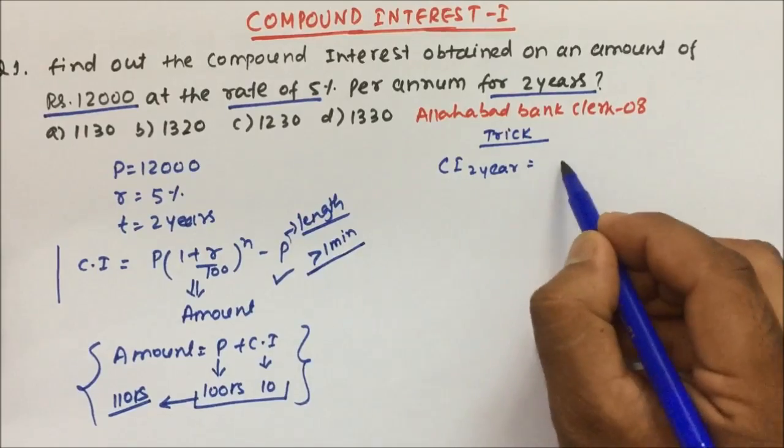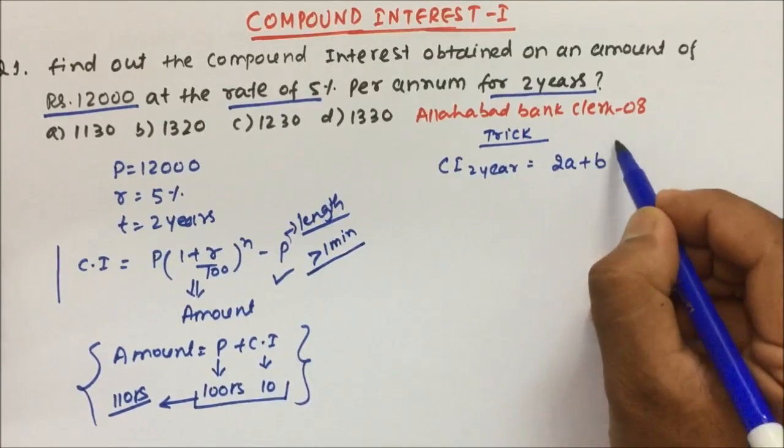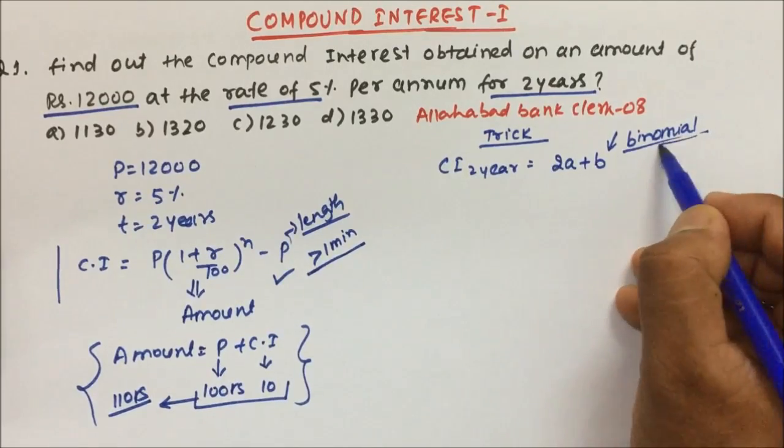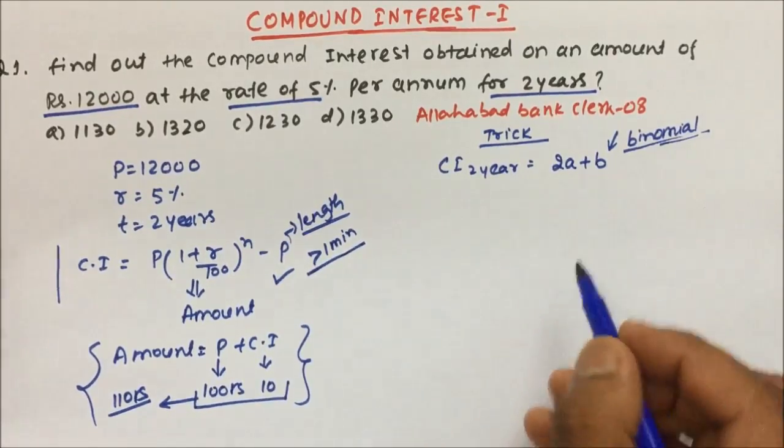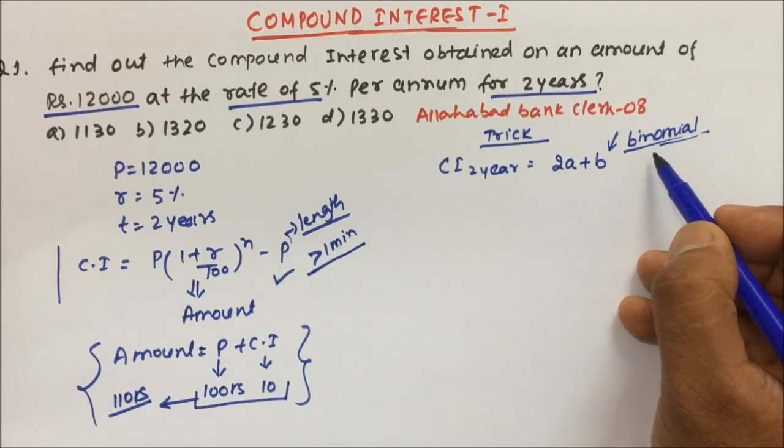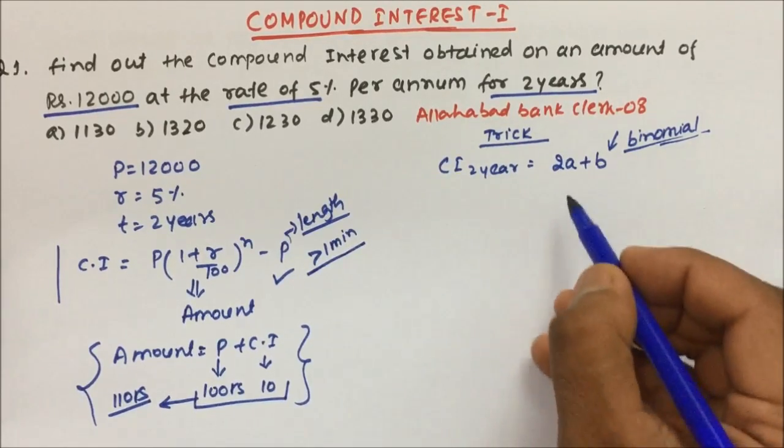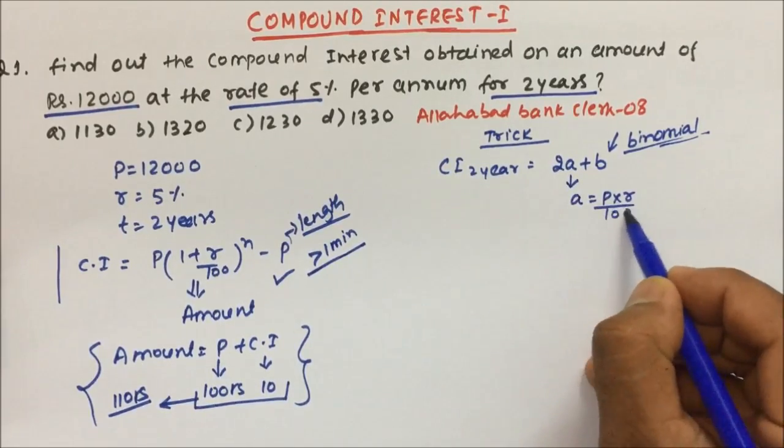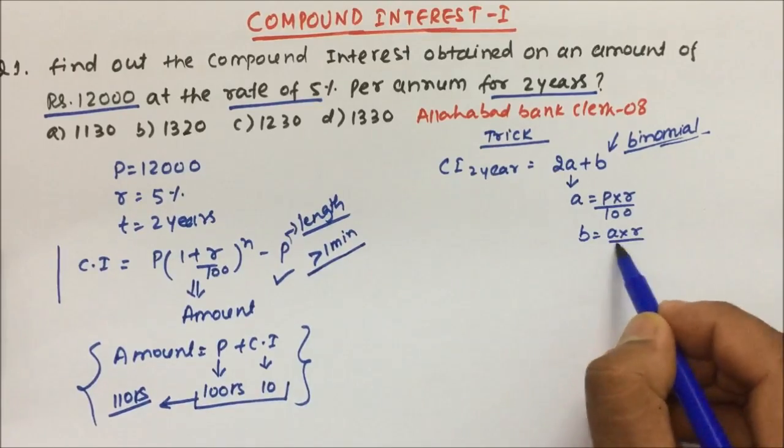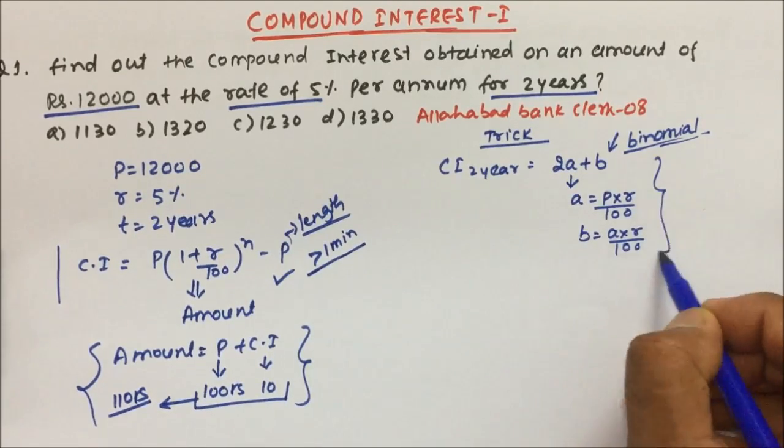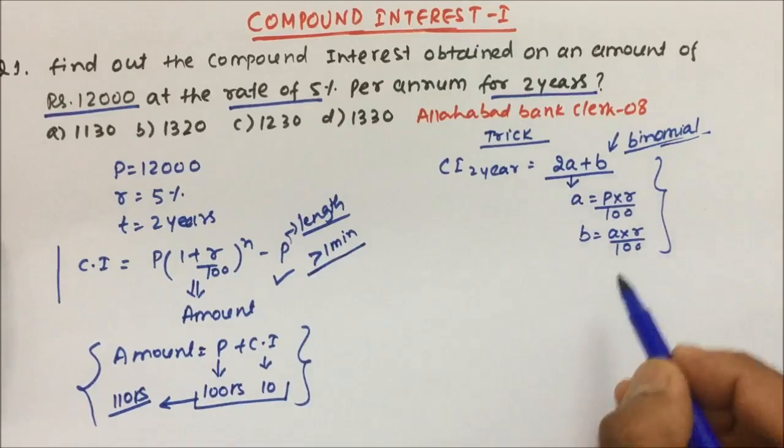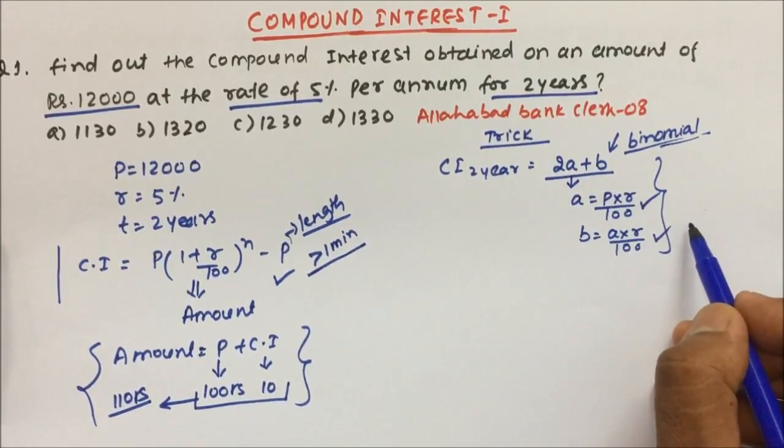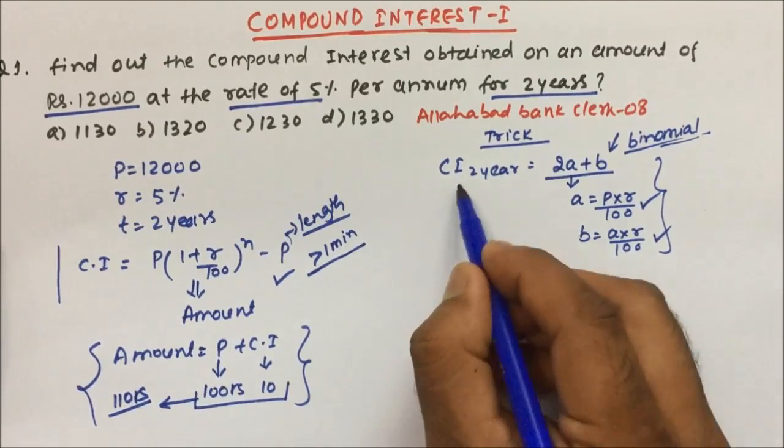The trick is for compound interest two years we have one formula: 2a plus b. And this is derived from binomial theorem. You will not get this formula anywhere on Google or on YouTube, so please understand it carefully and try to solve these questions within the fractions of seconds. So what is a here? A is nothing but P into R by 100. And what is b here? B is nothing but a into R by 100. Very easy to remember, right? Compound interest for two years equals 2a plus b, where a equals P into R by 100 and b equals a into R by 100.